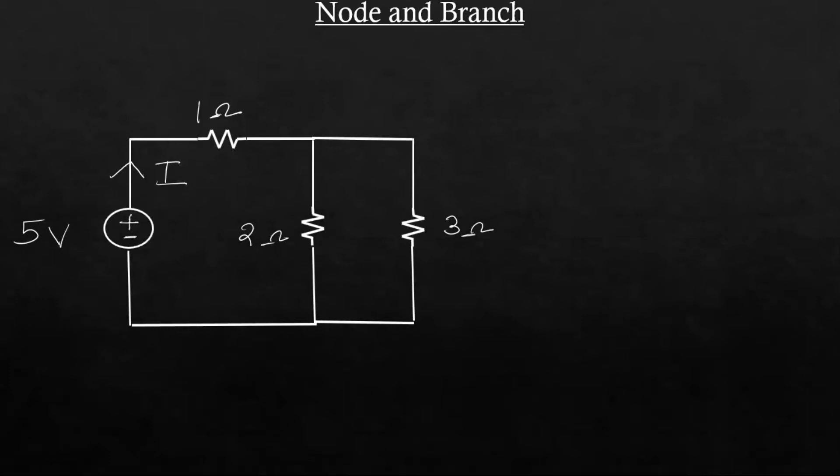The next term that we will understand is a node and a branch. Now what is a node? A node is a connection of two or more circuit elements.